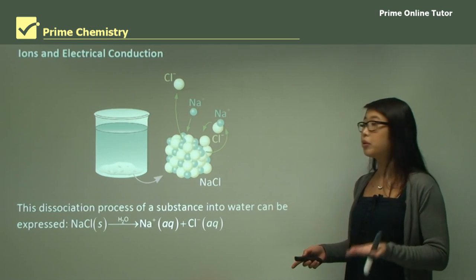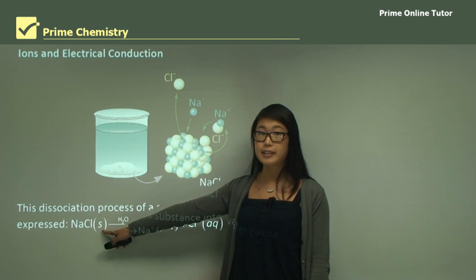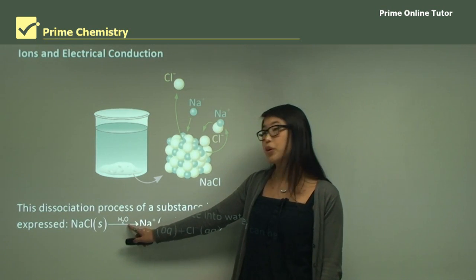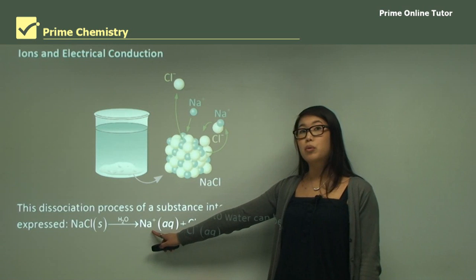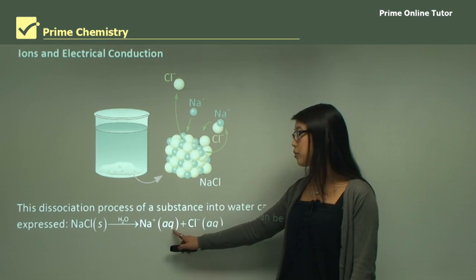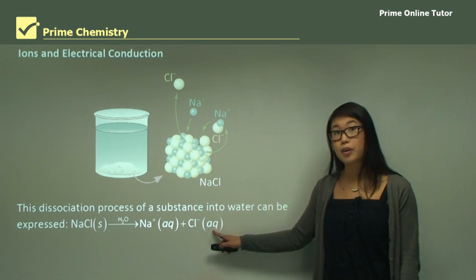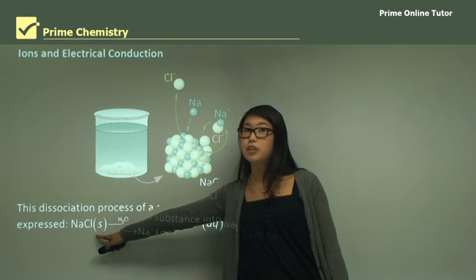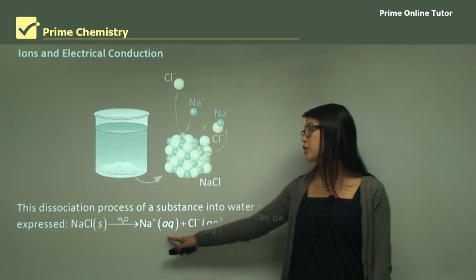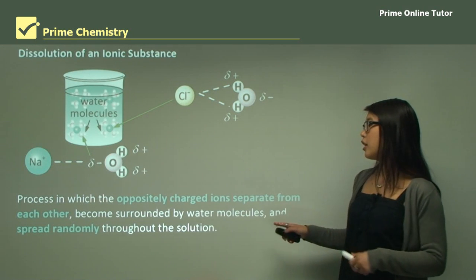The dissociation of a substance in water can be written as a chemical equation. Sodium chloride in solid form — denoted by (s) in brackets — is placed in water. Because there is no chemical reaction, water is written above the arrow. Sodium becomes an aqueous ion, denoted by (aq), and chloride ions also become aqueous (aq). This shows that solid NaCl dissociates into a sodium chloride solution.